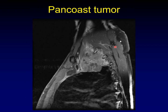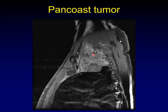Here's an example of a pancoast tumor. This mass began at the apex of the lung — it's actually a lung cancer. You can see it's very aggressive, extending into the ribs, into the chest wall, and up into the neck. Here's the anterior scalene muscle and somewhere in there the middle scalene muscle — the scalene triangle completely filled in with tumor. You can imagine how that's going to affect the brachial plexus that's supposed to be living right there.